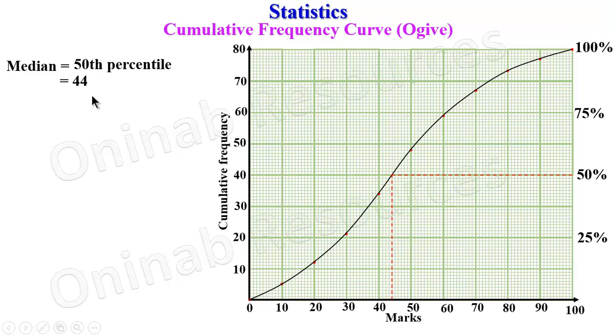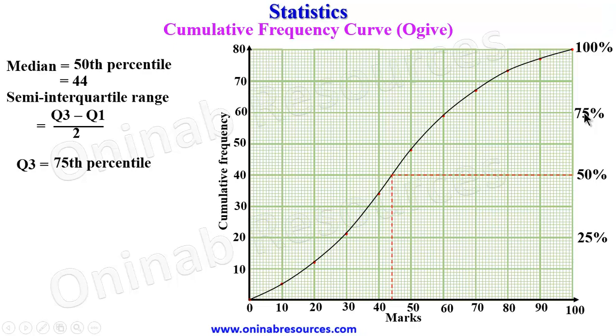Then we go for semi-interquartile range. Semi-interquartile range is interquartile range divided by 2. To get our Q3, which is also known as the upper quartile, it is 75th percentile. We go to the graph on the percentile axis, trace the line of 75% to the curve, and trace it down to the marks. This is 60, 61. So the Q3, which is 75th percentile, is 61.